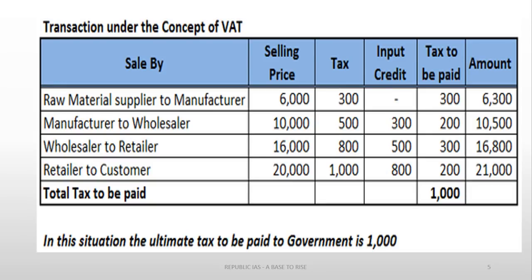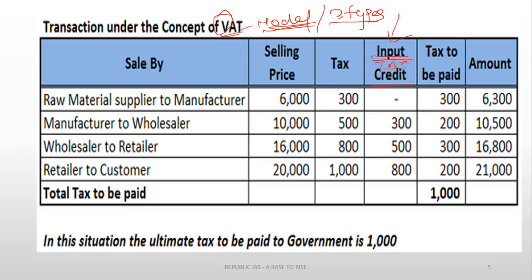To mitigate these problems, VAT was introduced. VAT is a model of taxation — it is not a tax in itself. From the name itself, VAT means tax on value addition. VAT is of three types, but the type followed in India is the input tax credit system type. This is the most important one to understand.